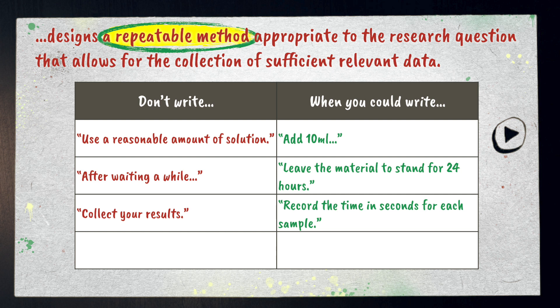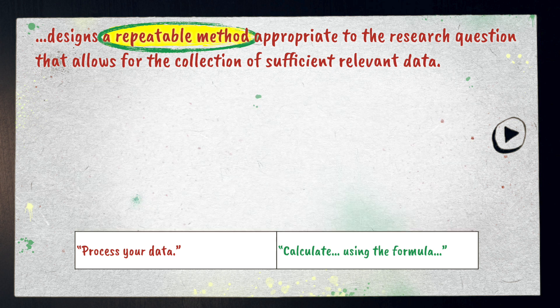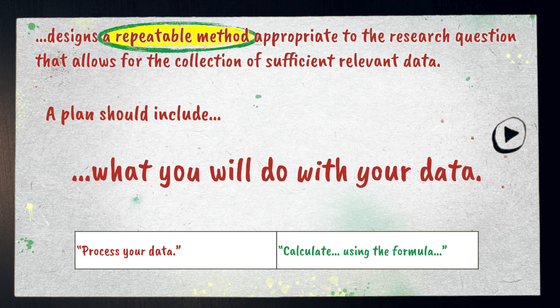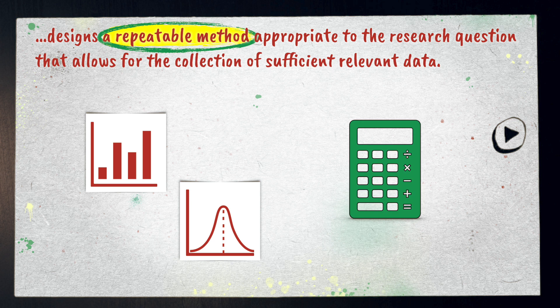If you use vague statements, anyone else who wanted to use your method would need to look for clarification, so the method isn't really repeatable. A final example: don't say 'process your data' — a better alternative might be something like 'calculate [something] using the formula [such and such].' I want to really emphasize this point.